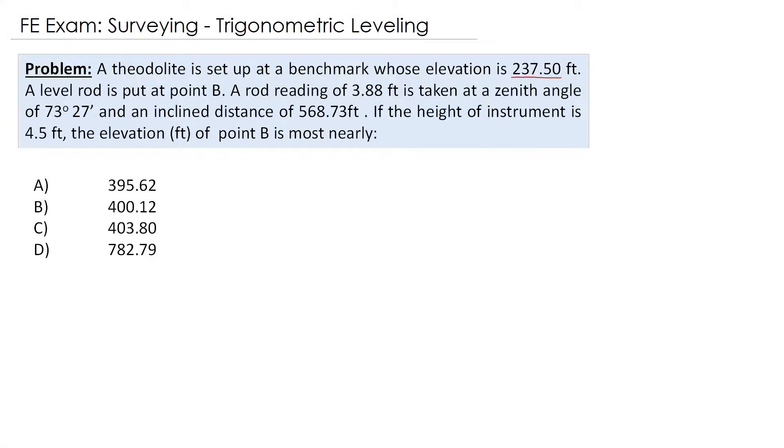Welcome back everybody, today we are discussing a surveying problem related to trigonometric leveling. We have a theodolite set up at a benchmark whose elevation is 237.5 foot, a level rod is put at point B.